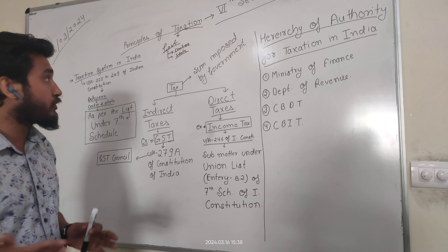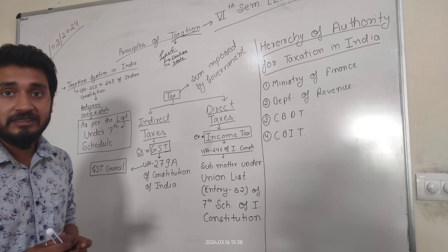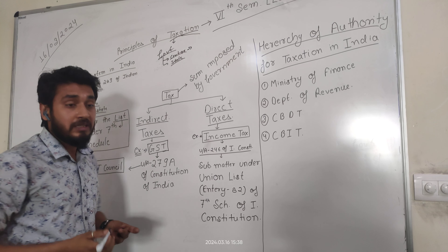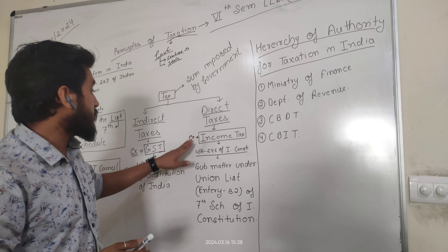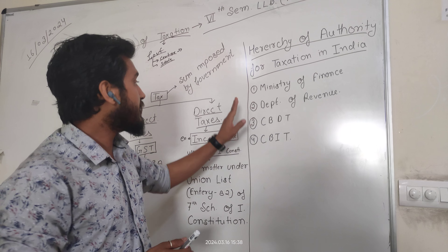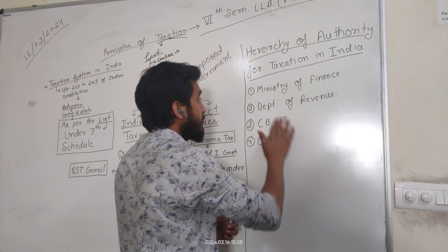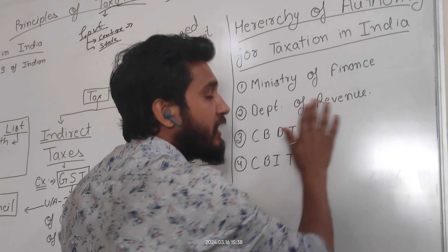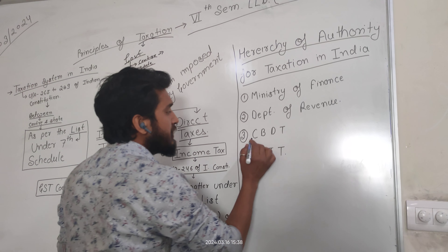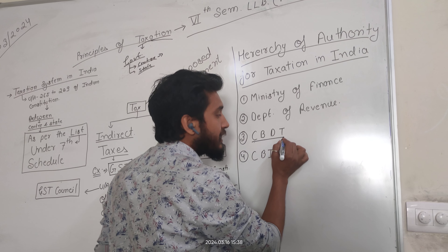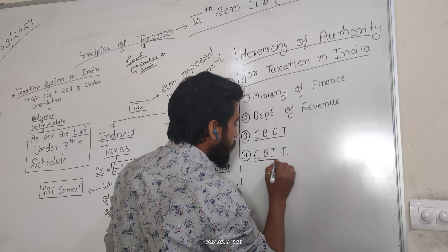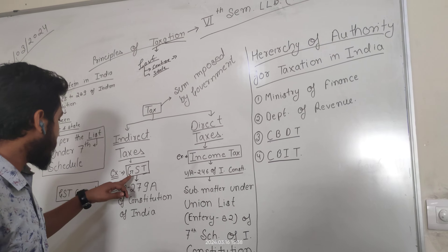The authority which can impose and collect taxes, especially Income Tax, is the Central Government. There are specific authorities for Income Tax, and the hierarchy is as follows: Ministry of Finance, under which there is the Department of Revenue. Under the Department of Revenue there are two authorities: the Central Board of Direct Taxes (CBDT), which covers Income Tax, and the Central Board of Indirect Taxes and Customs (CBIC), which covers GST.